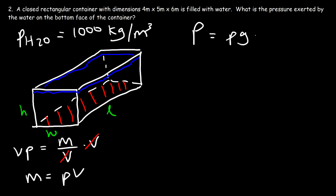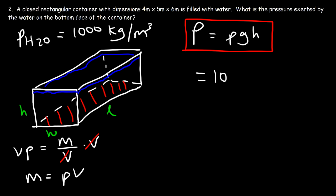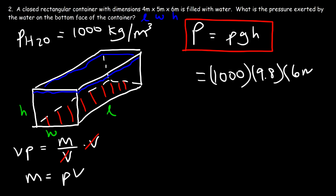This is the equation to keep in mind when dealing with pressure due to a fluid. The density of water is 1,000 kilograms per cubic meter, gravitational acceleration is 9.8, and the height of the fluid is 6 meters. So the pressure is 1,000 times 9.8 times 6, which equals 58,800 pascals. That's the pressure due to the weight of the water alone.